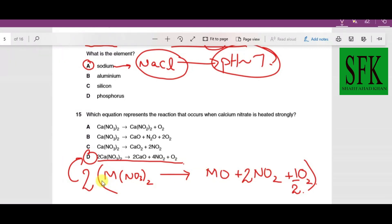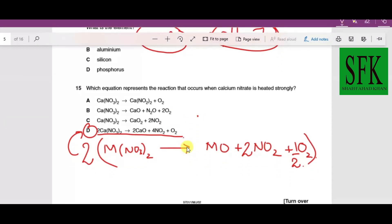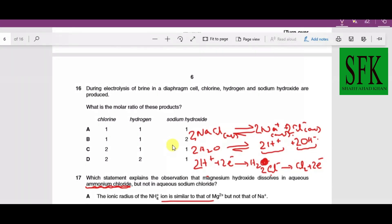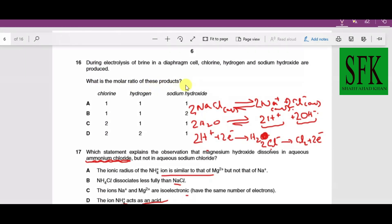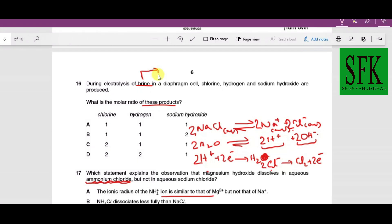During electrolysis of brine in a diaphragm cell, chlorine, hydrogen, and sodium hydroxide are produced. What is the molar ratio of these products? Brine is concentrated sodium chloride. In aqueous solution you get Na⁺ and Cl⁻ ions, plus H⁺ and OH⁻ ions. Since it's concentrated, on the anode you'll get chlorine gas and on the cathode you'll get hydrogen gas. We need to balance the equations because they're asking for molar ratios.